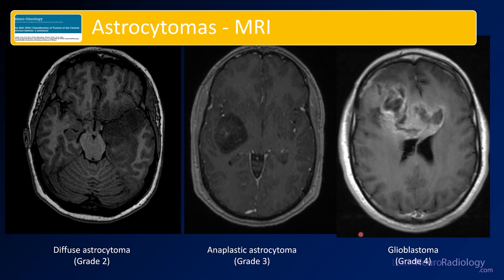This is an MRI summary showing the same spectrum. You've got that temporal mass that looks not too bad for the grade 2, a little bit of enhancement for the grade 3, and by the time you get to the grade 4 lesion you've got pretty bad heterogeneous enhancement — a really heterogeneous-looking mass.